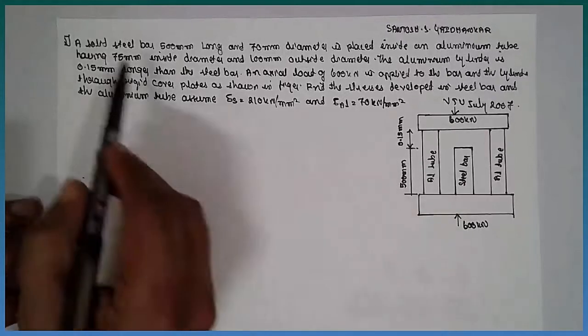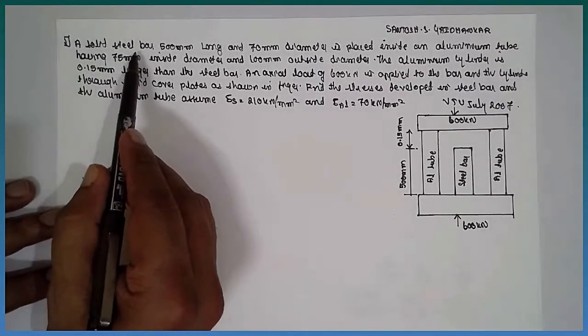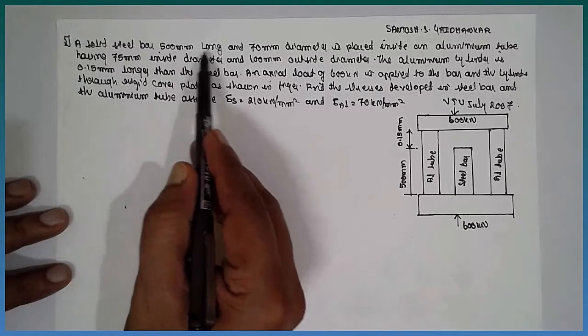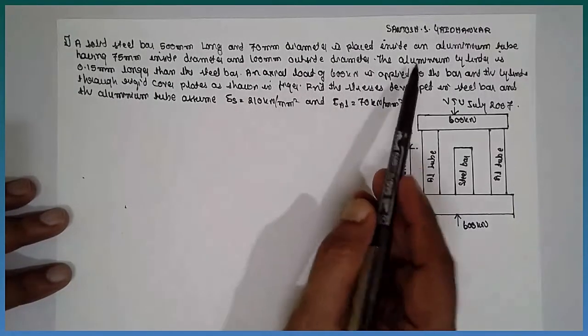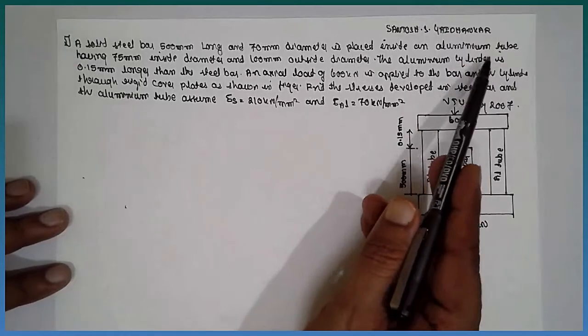This is a V-tube problem. A solid steel bar, 500 mm long and 70 mm diameter, is placed inside an aluminum tube.